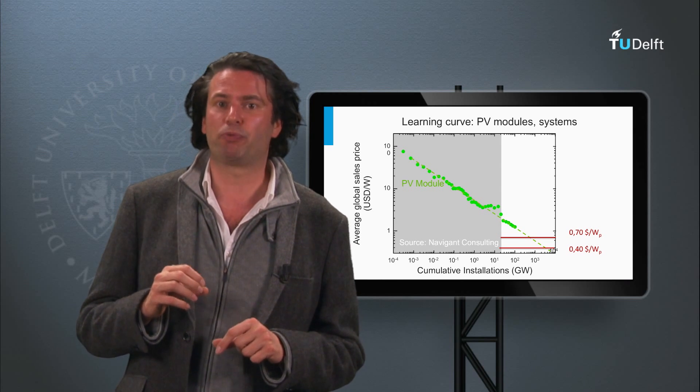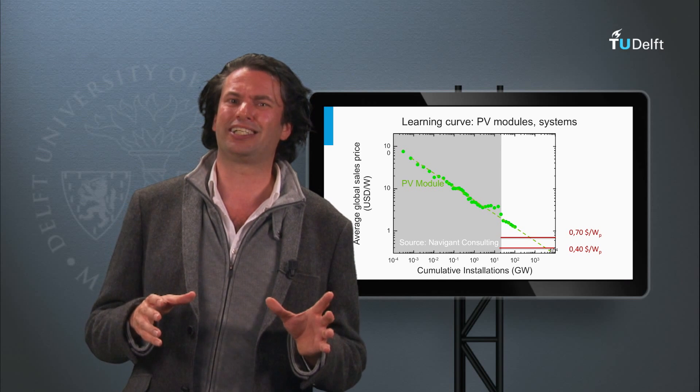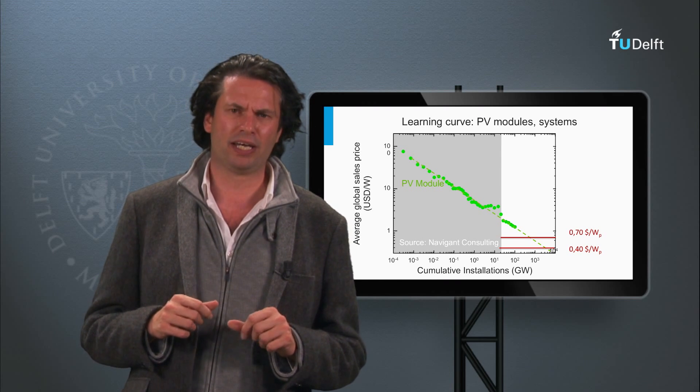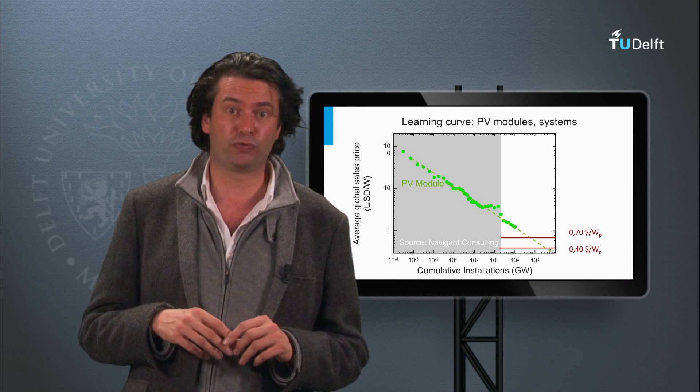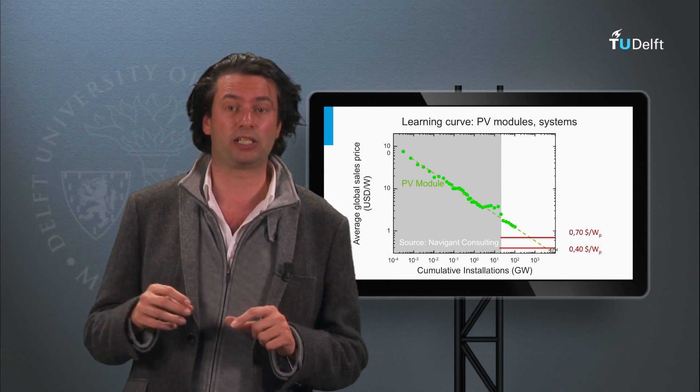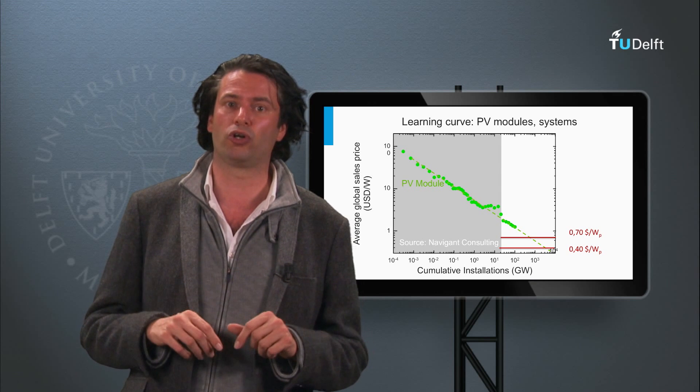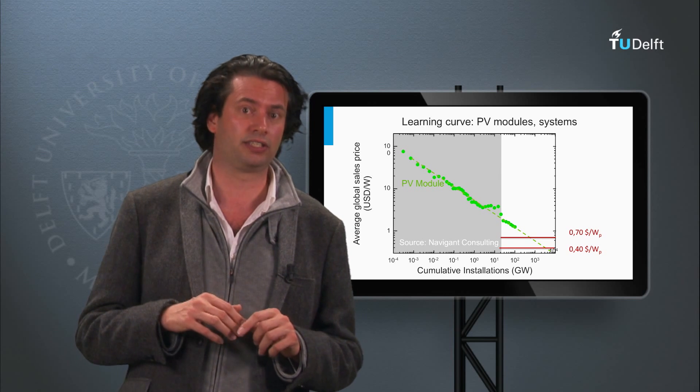The current cost price per watt peak of the First Solar products is in the order of 68 to 70 dollar cents per watt peak and is expected to drop to 40 dollar cents per watt peak in the future, keeping the cost price per watt peak lower than the solar modules based on crystalline silicon wafers.